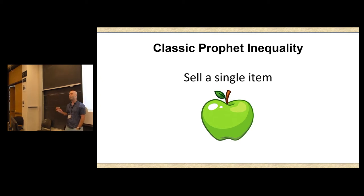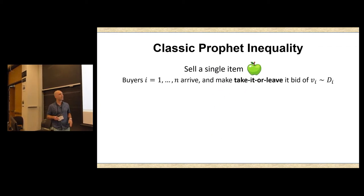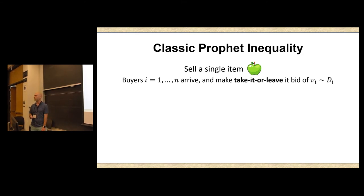So suppose you want to sell a single item, this delicious Granny Smith apple here on my left. And the dynamics of the market are as follows. We have a bunch of impatient buyers who arrive one after another. And when a buyer arrives, they make a take it or leave it bid for your single item. So without assuming anything, you can't really get any kind of guarantees. So we're going to assume that these valuations are drawn from some known set of distributions, D1 through Dn.